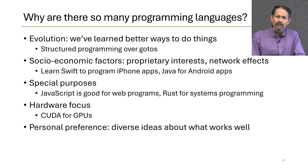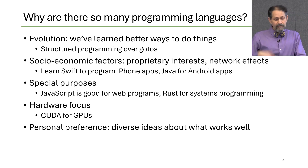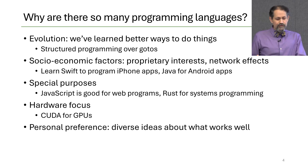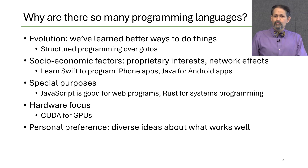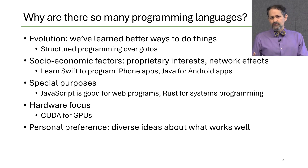Therefore, we'll be talking about both language designs and implementations as we go along. Why are there so many programming languages? First, there's a story of evolution. Over time, we've learned better ways to do things. While early programming languages used go-to statements to control flow from one part of the program to another, now we use structured programming constructs such as if statements and while loops.